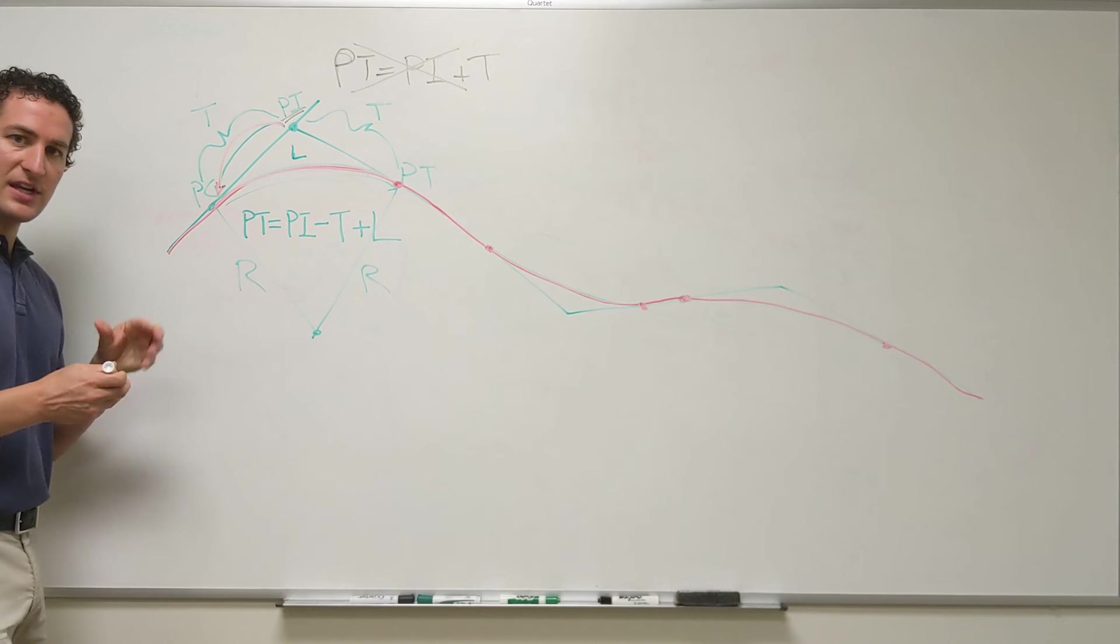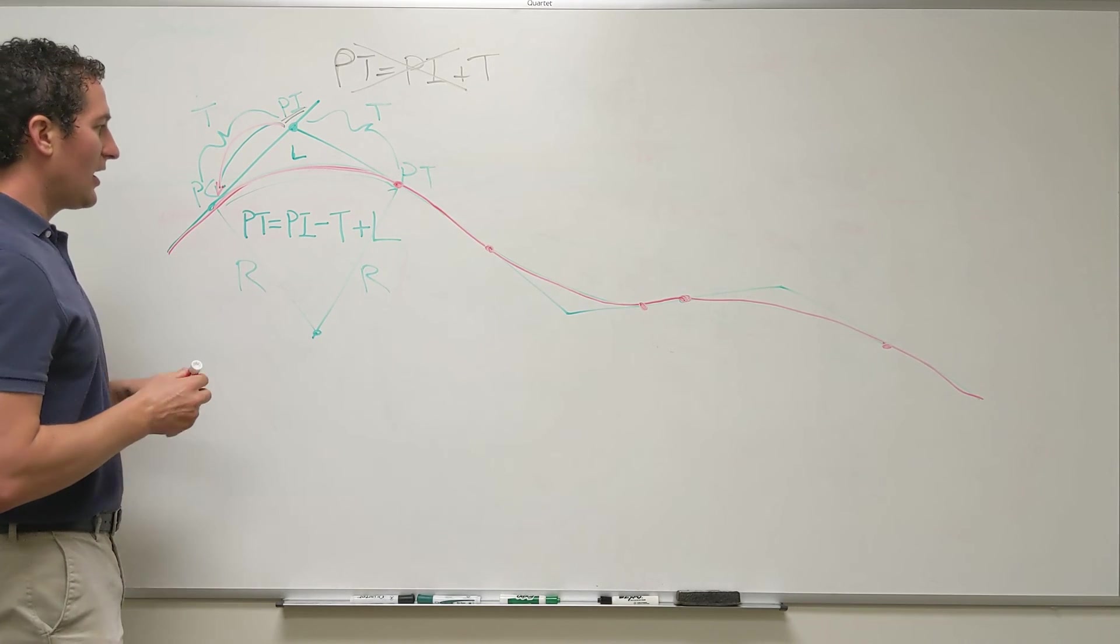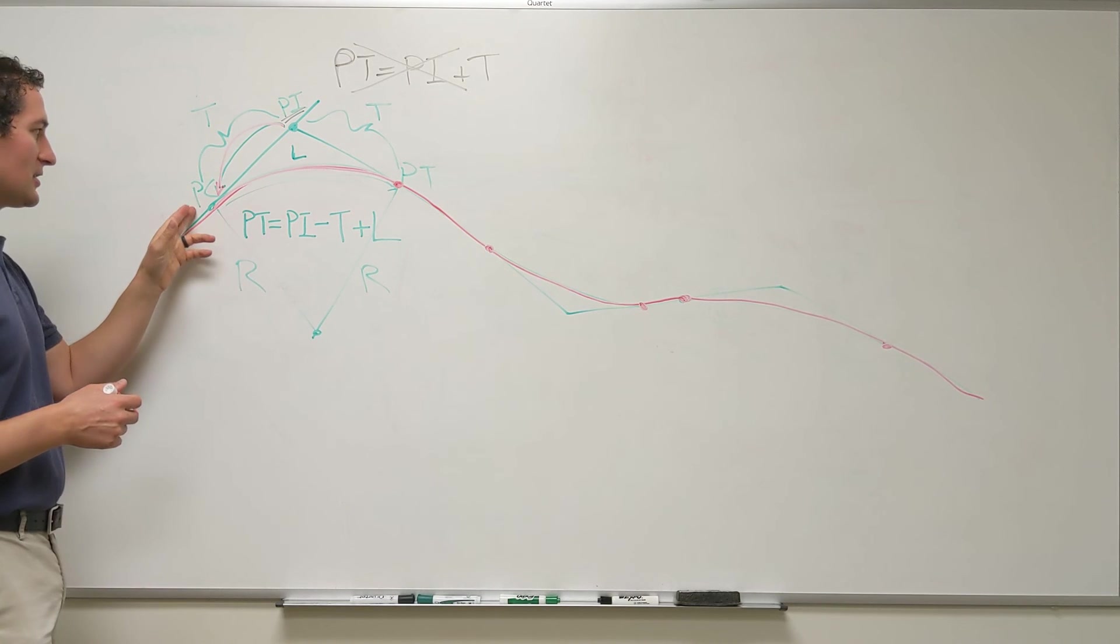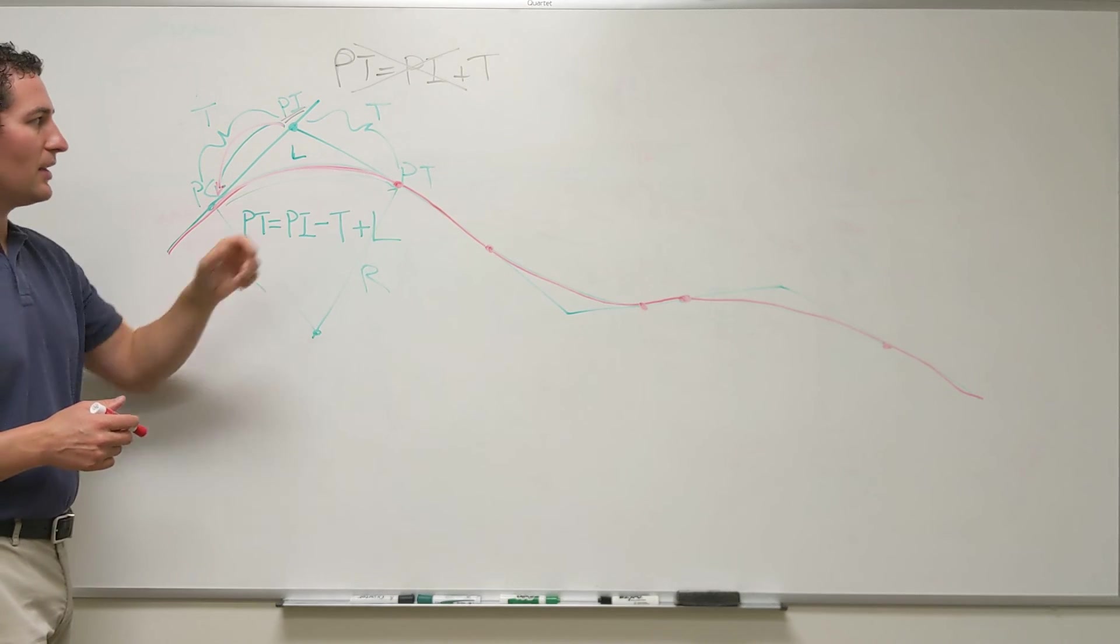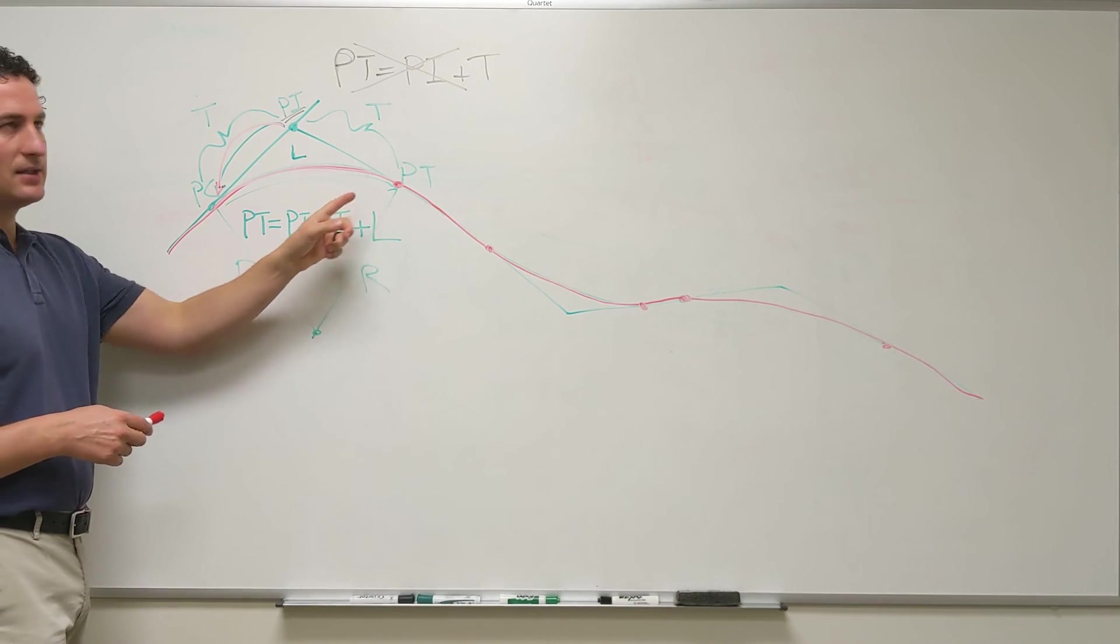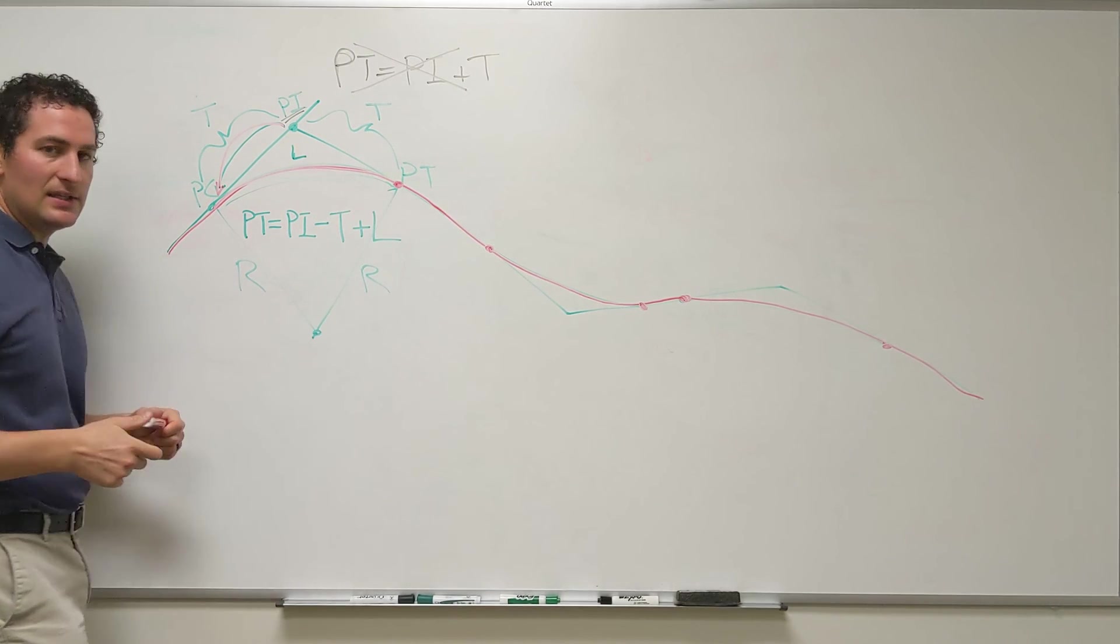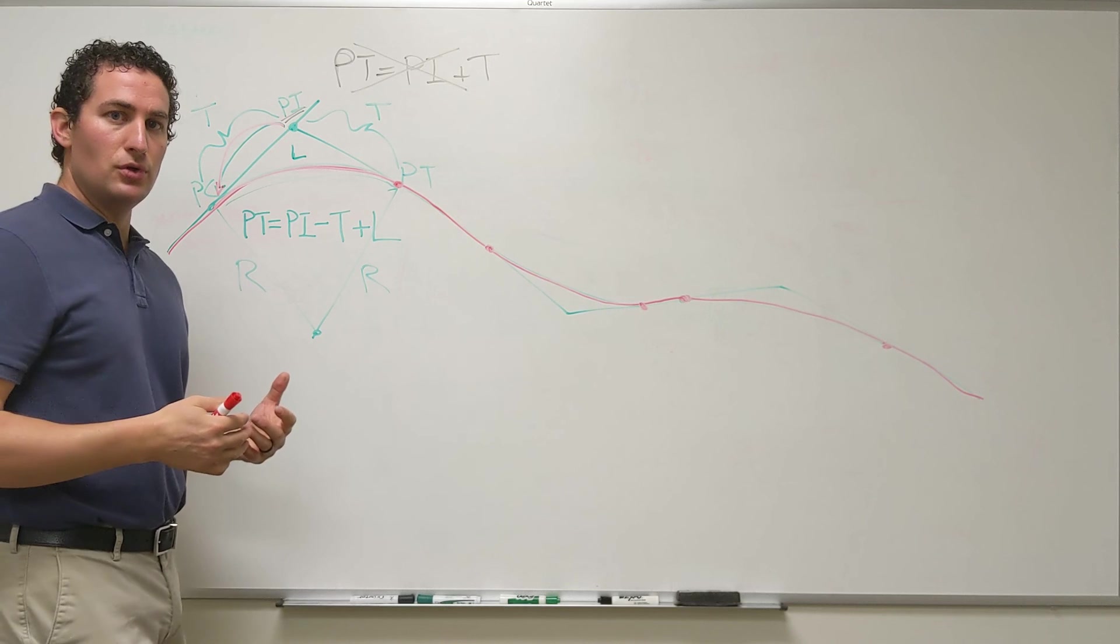So again, for the stationing of horizontal curves, our correct procedure is to go from the PI to the PC, then along the length of the curve to reach the PT. You cannot go directly from the PI to the PT to maintain and compute your stations.